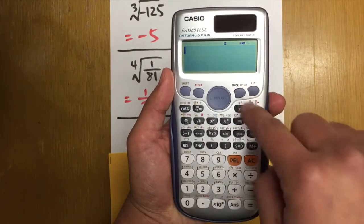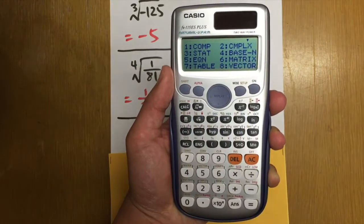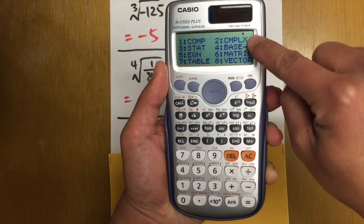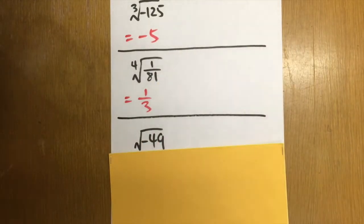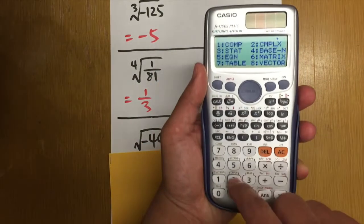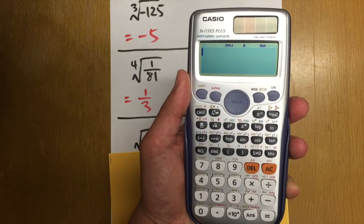Let me show you. You're going to go back to this page. And then go to mode again. The first one is for the regular computation. The second one is to deal with complex numbers. You know this right here has to be a complex value. So hit number 2.